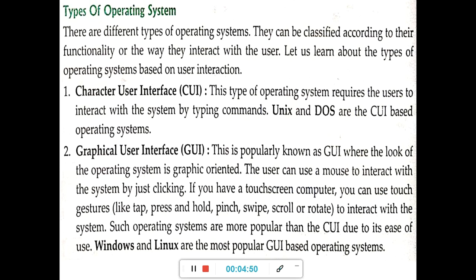Whereas in a Graphical User Interface (GUI), the user can use a mouse to interact with the system by just clicking. If you have a touchscreen computer, you can use touch gestures to interact with the system. Examples are Windows and Linux. Using a mouse, we can click on any application and do our work.